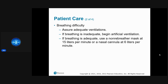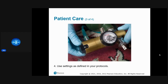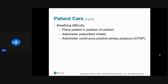To care for a patient with breathing difficulties: ensure adequate ventilation. If they're ventilating adequately but have lower SpO2, provide supplemental oxygen. If breathing is inadequate, begin BVM ventilation. If breathing is adequate, use a non-rebreather at 15 liters or nasal cannula at 6 liters. Place the patient in a position of comfort — usually sitting up — and help with a prescribed inhaler if indicated.